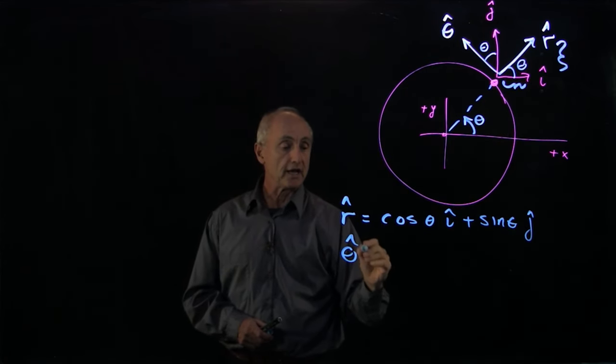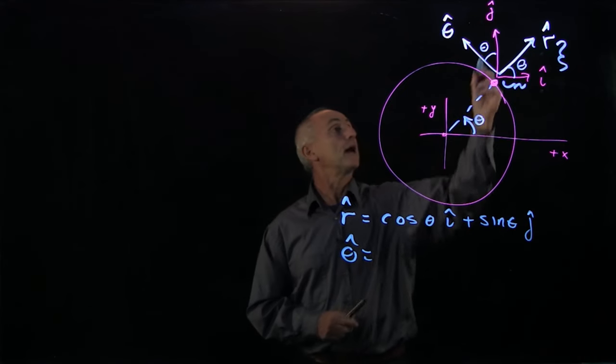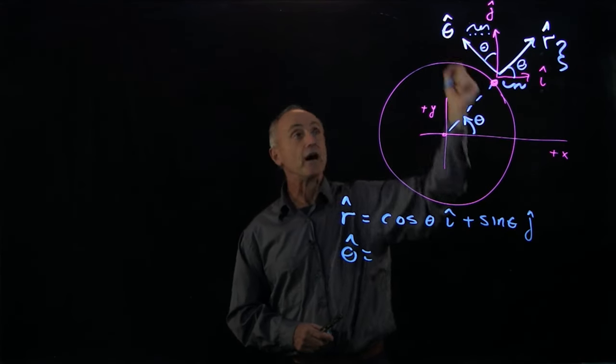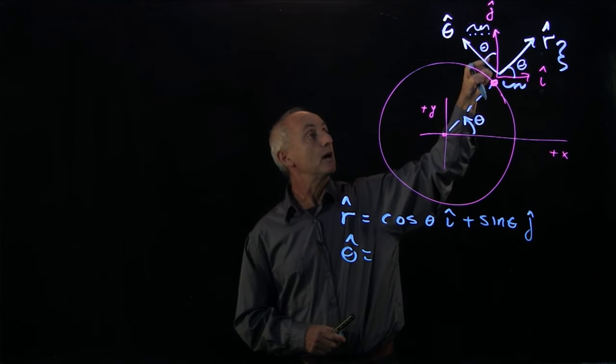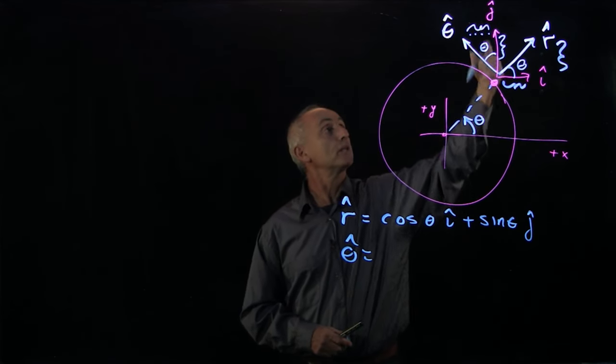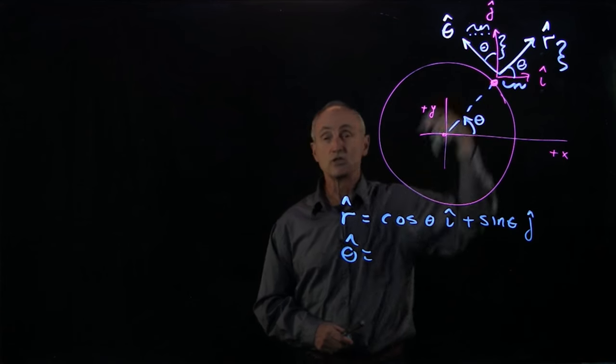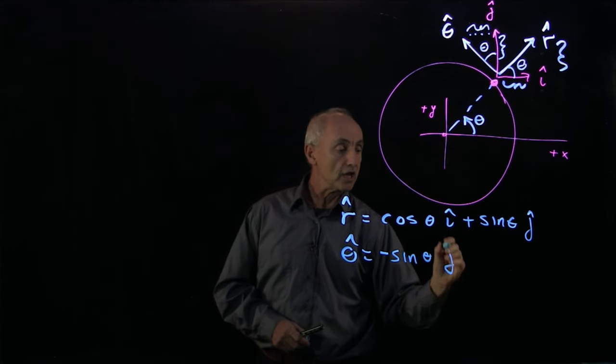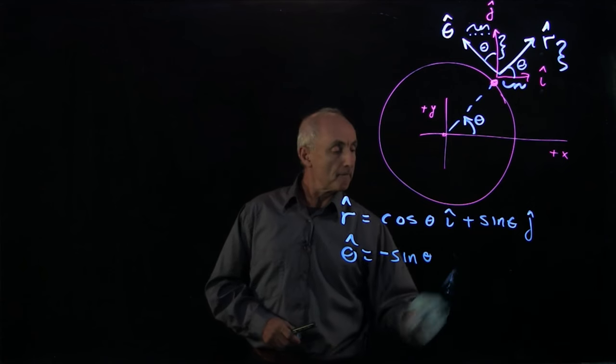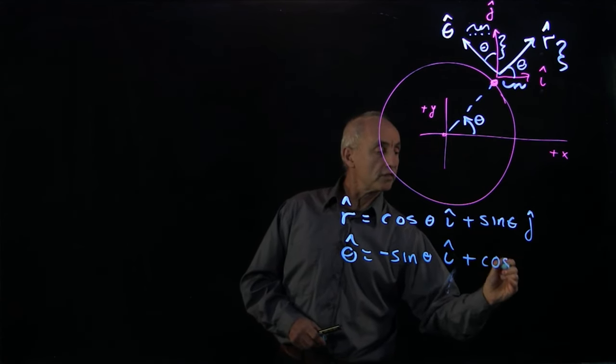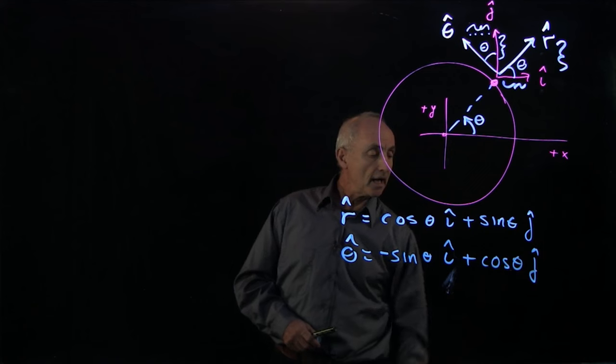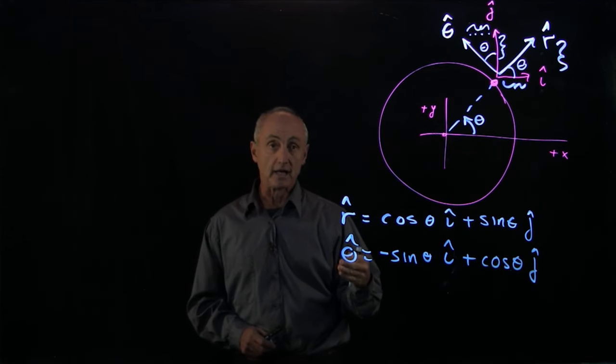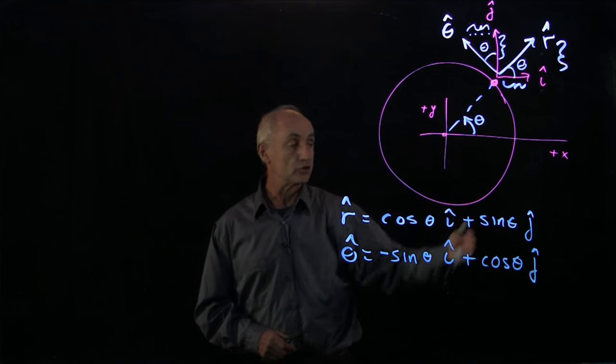In a similar fashion, theta hat has a component in the negative i hat direction, which is opposite the angle. And it has a component in the positive j hat direction, which is adjacent to the angle. So we have minus sine theta i hat plus cosine theta j hat. And that's how we can decompose our unit vectors r hat and theta hat in terms of Cartesian coordinates.